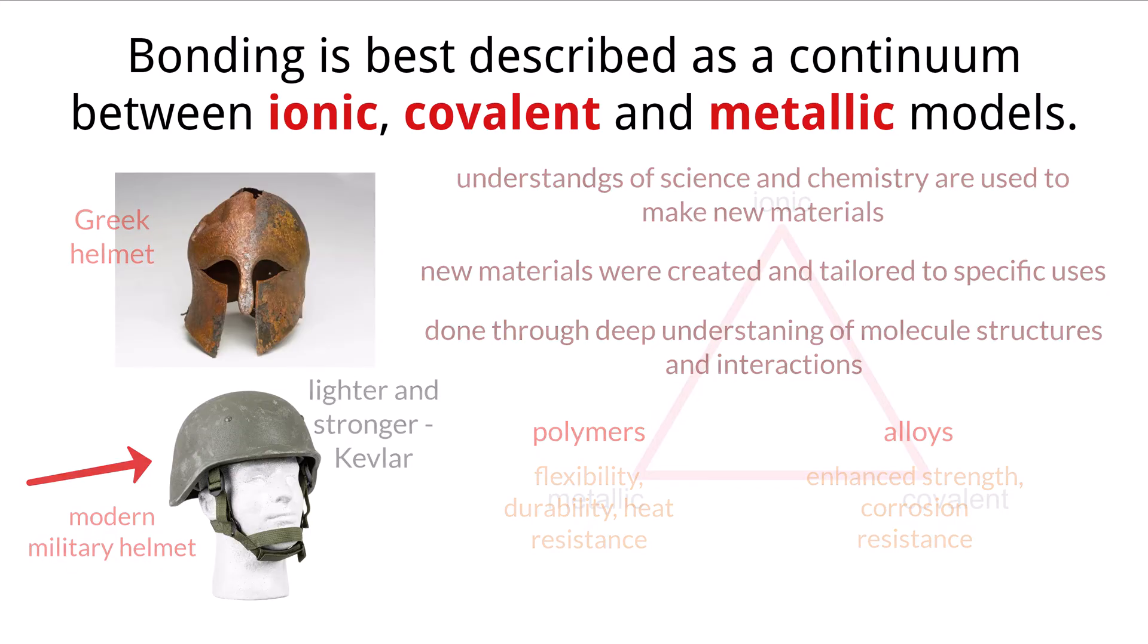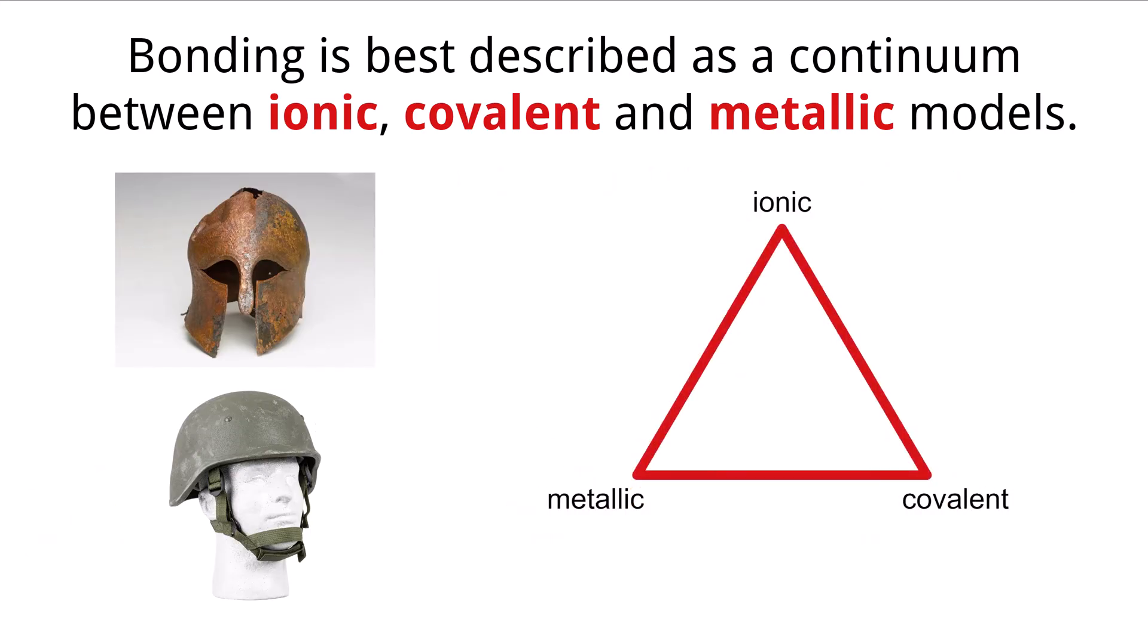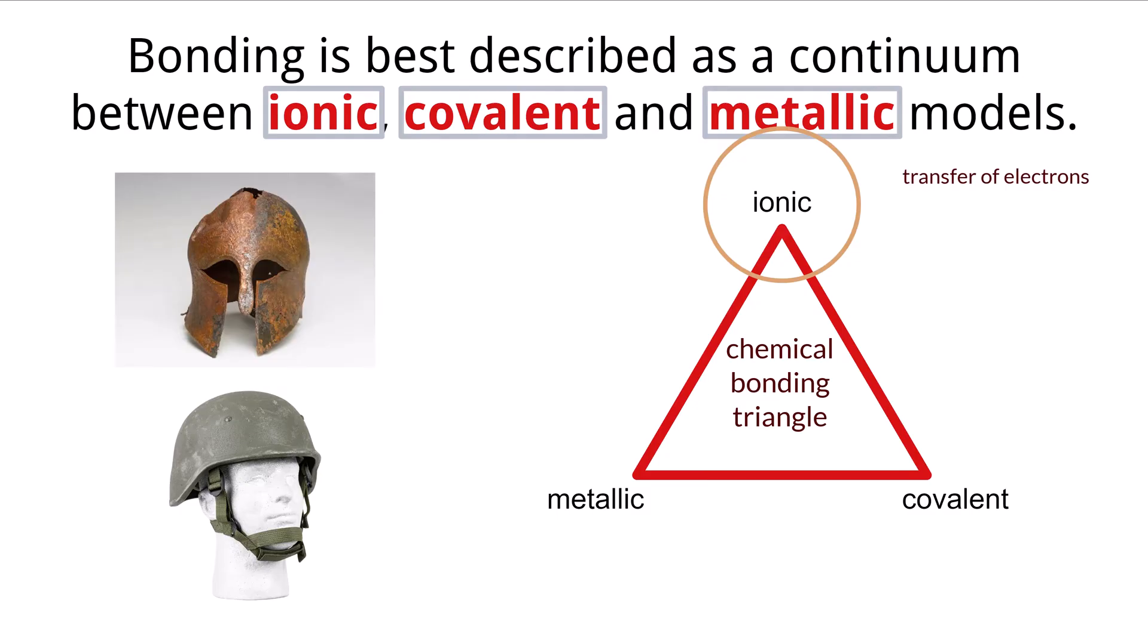To review, chemical bonding is a fundamental process through which atoms combine to form molecules and compounds. There are three primary models that describe chemical bonding: the ionic model, the covalent model, and the metallic model. The ionic model involves the transfer of electrons between atoms resulting in the formation of positively and negatively charged ions that are held together by electrostatic forces.